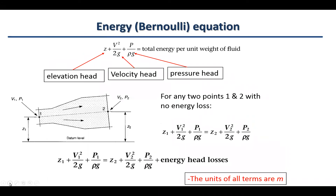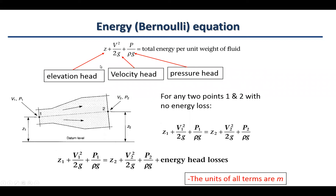With that introduction, let's look at the energy equation, also known as Bernoulli's equation. It has three terms as we initially discussed. The total energy is not lost — based on the conservation of energy, all three terms remain, but they may be converted from one form to another, such as kinetic to potential or vice versa. In Bernoulli's equation, all terms are expressed in units of head.